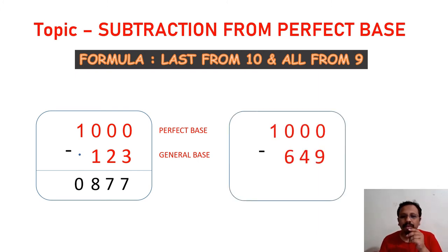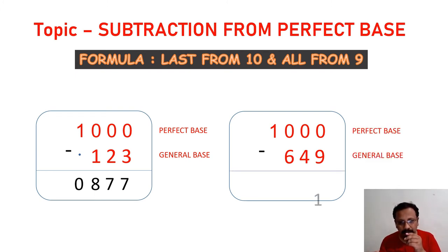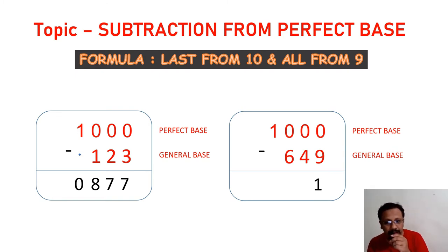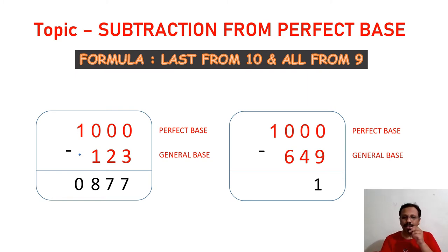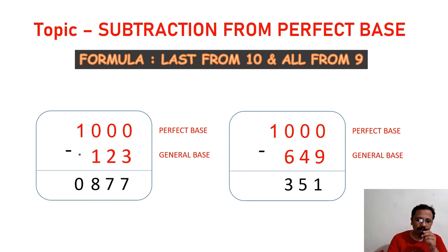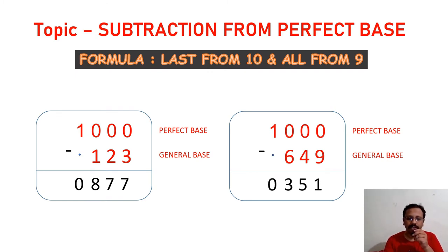Next example: 1000 minus 649. Again, 1000 is the perfect base and 649 is the general base. Complementary of 9 using base 10 is 1, complementary of 4 using base 9 is 5, complementary of 6 using base 9 is 3. Place a dot below 1, so 1 minus 1 equals 0. Our answer is 351.